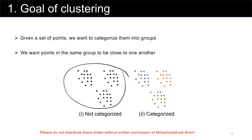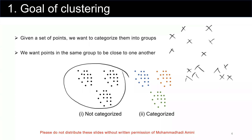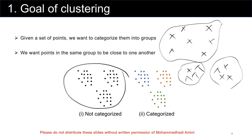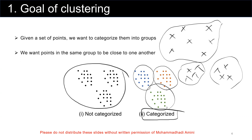For example, you have some cars on the streets and you want to cluster the cars which are closest together. Here we can have three clusters. After we categorize them, we want to have some number of clusters that represent the classification of our data.